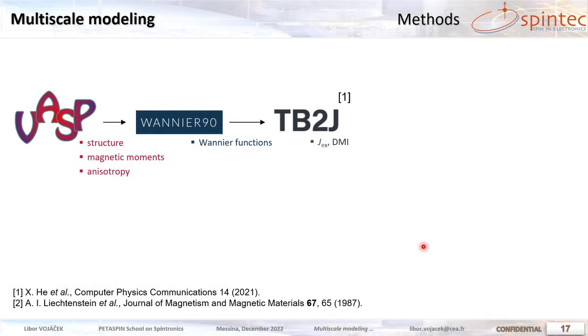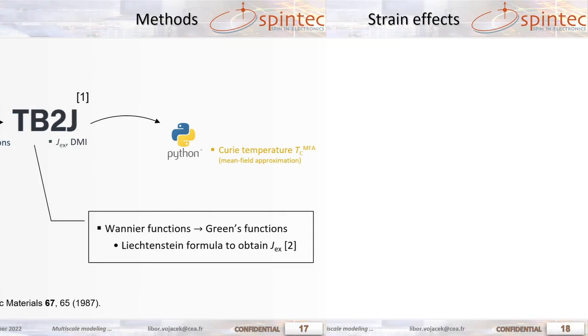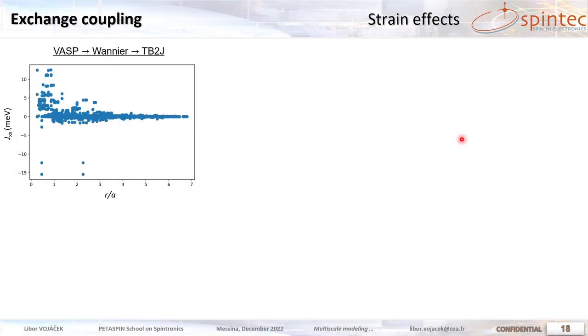So with the TB2J package we can do this. It constructs Green's functions from these Wannier functions and then it can employ the Liechtenstein perturbative formula to get the exchange coefficients at arbitrary distance. Then we take these exchange coefficients and we estimate the Curie temperature by the mean field approximation again with a code in Python. So here the exchange coefficients, the interactions depending on the distance. We can also distinguish between which atoms they happen.